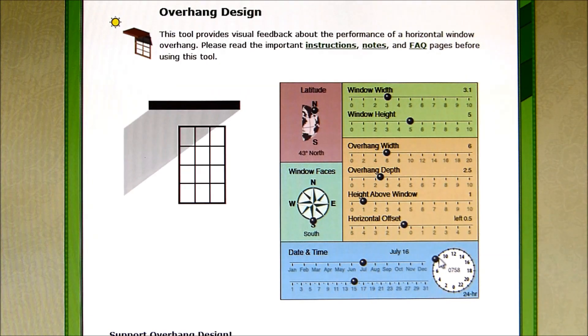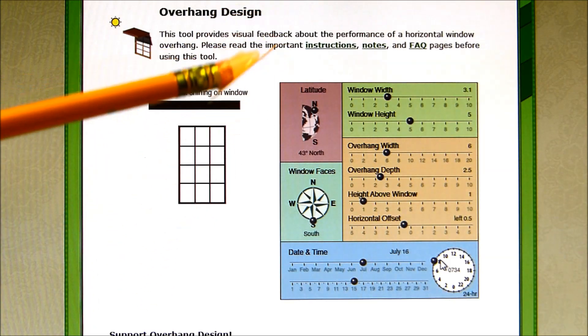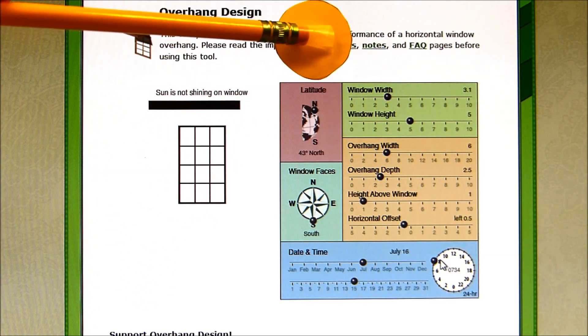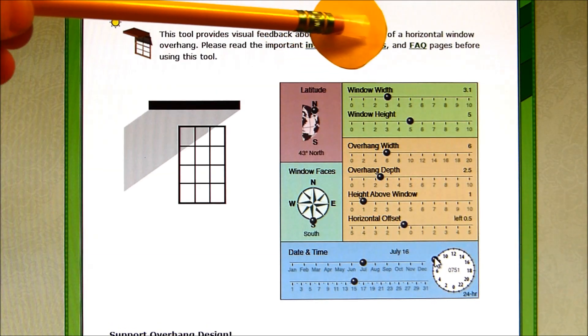As we drag this little slider around the clock, there's a shadow that's shown on the window. What I'd like to explain, that it took me a minute to figure out, is that I want you to imagine that we're standing outside the house looking at this window, and we're going to call this the sun right here.